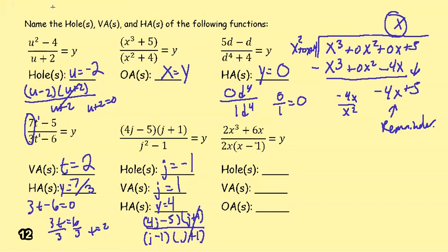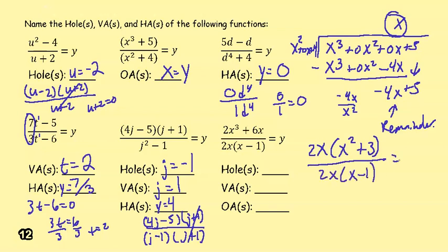For y = (2x³ + 6x) / (2x(x - 1)), we factor the numerator: we can factor out 2x, leaving x² + 3. The 2x's cancel, so there is a hole at x = 0. Setting the denominator equal to zero gives a vertical asymptote at x = 1.